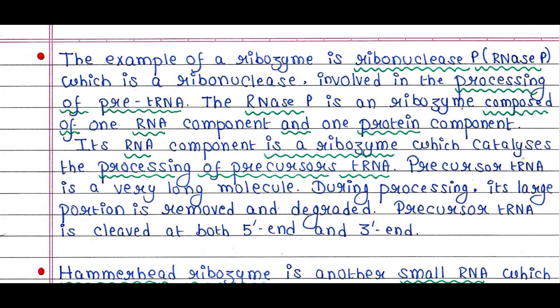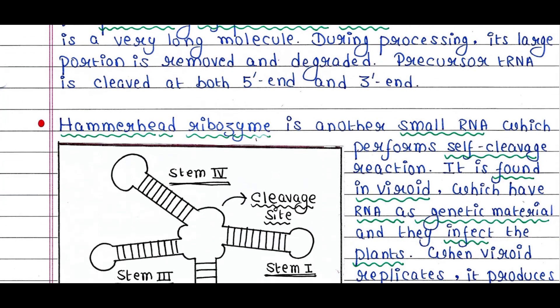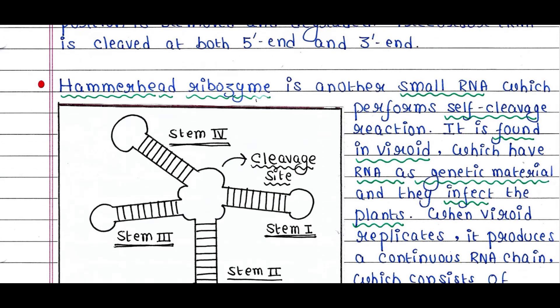Pre-cursor tRNA is a very long molecule. During processing, a large portion is removed and degraded. Pre-cursor tRNA is cleaved at both the 5' end and the 3' end.